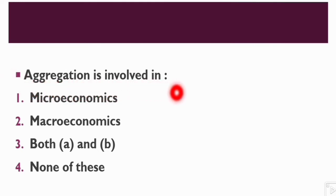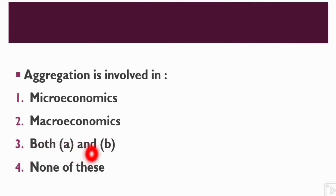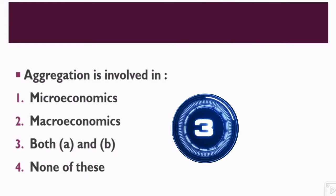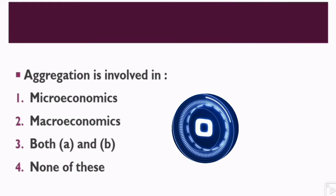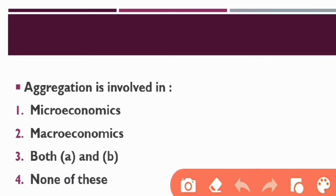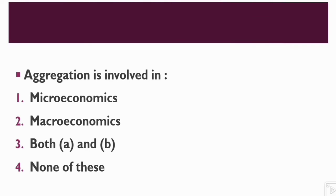Question number 3: Aggregation is involved in — Option 1: Microeconomics, Option 2: Macroeconomics, Option 3: Both A and B, Option 4: None of These. The right answer is option number 3. Aggregation is involved in both A and B. Aggregation means total, but in microeconomics there is limited aggregation, and in macroeconomics there is unlimited aggregation in which we study the economy as a whole.